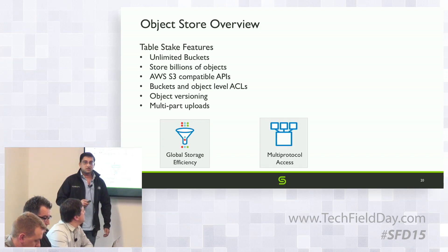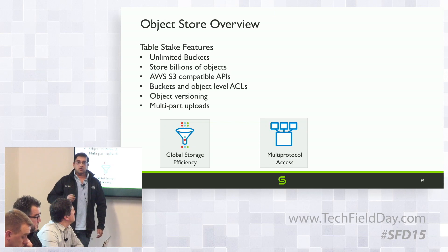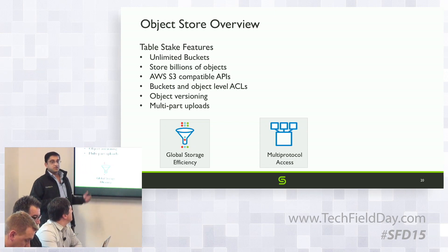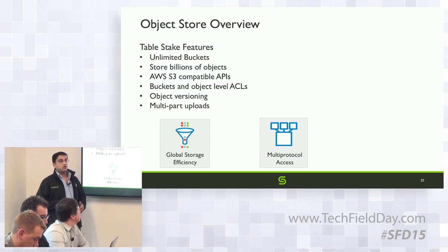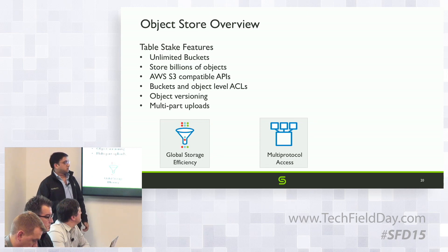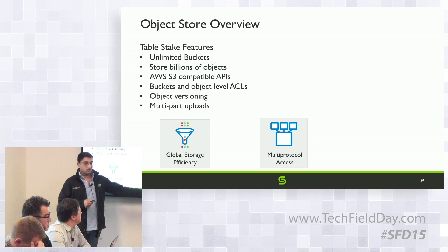We provide multi-protocol access for our data. As Mohit mentioned, you can dump data via NFS and SMB and now access the same data via S3 — for example, to expose it to your Spark job for analytics. I'll go into details about multi-protocol access in the next few slides.